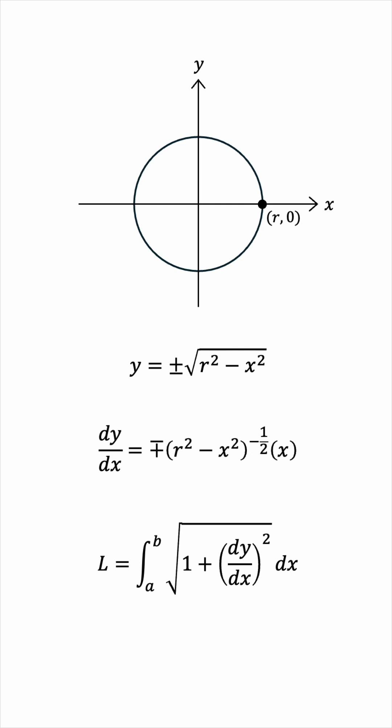And then, we can bring the r squared minus x squared to the denominator with a square root, and this is dy by dx.